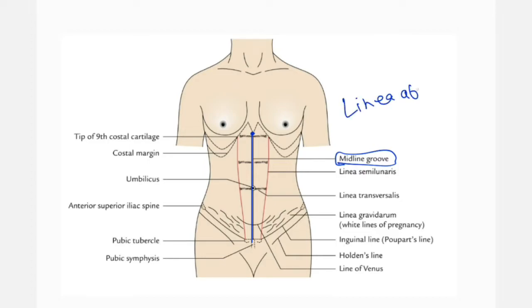I will mark the linea alba. This linea alba divides the abdomen into right and left halves, and also divides the rectus abdominis muscle into two parts. If you go a little lateral to this...